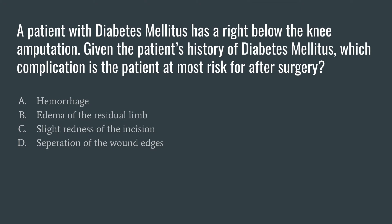Our question today: a patient with diabetes mellitus has a right below-the-knee amputation. Given the patient's history of diabetes mellitus, which complication is the patient at most risk for after surgery? Some keywords: diabetes mellitus and a recent amputation. Given the history of diabetes mellitus, which complication is the patient at greatest risk for?